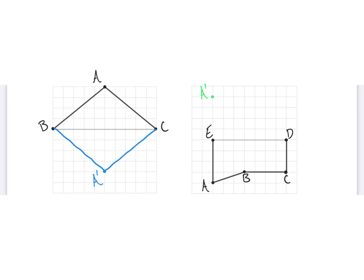Next, we have B, which is 1, 2, 3 units down from the line of symmetry. So, we'll go 1, 2, 3 units up from the line of symmetry. And we have point C, which is 1, 2, 3 units down from the line of symmetry.